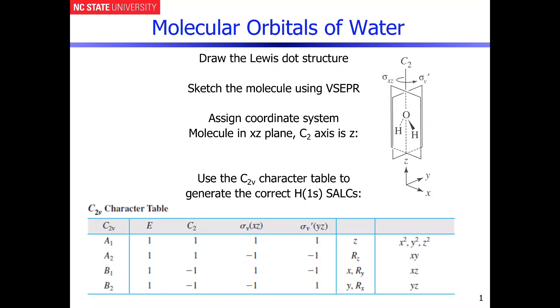As with all molecular orbital pictures, the first thing you need to do is to draw the Lewis dot structure of the compound and of course water here is H2O pictured over here to the right.